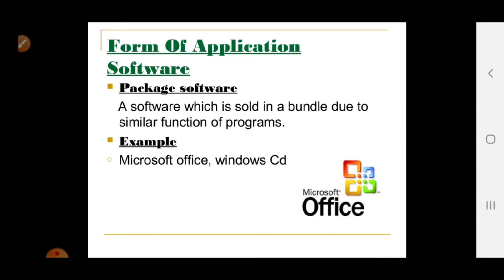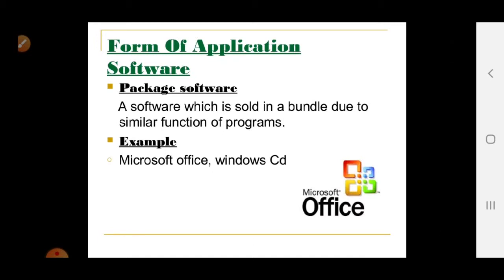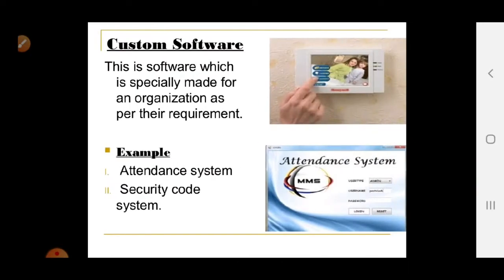Package software — the most common example is Microsoft Office, which includes Word, Excel, PowerPoint, Access, and Outlook. It is software sold in a bundle due to similar functions of the programs. Another example is Windows on CD.